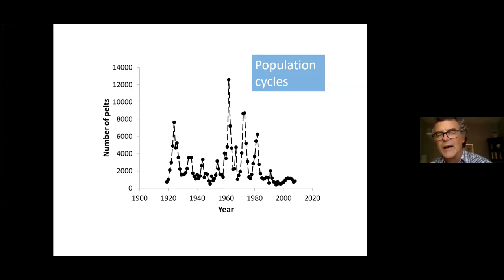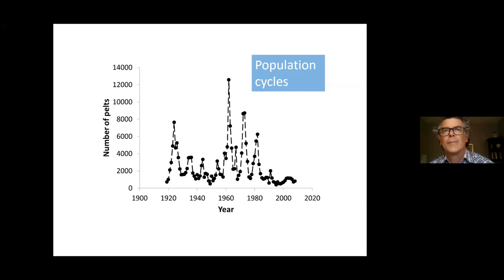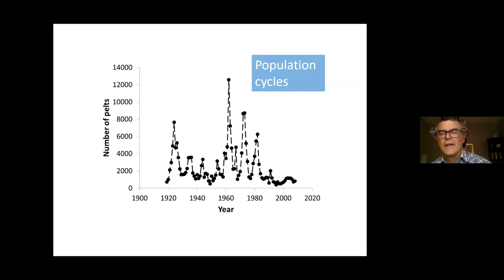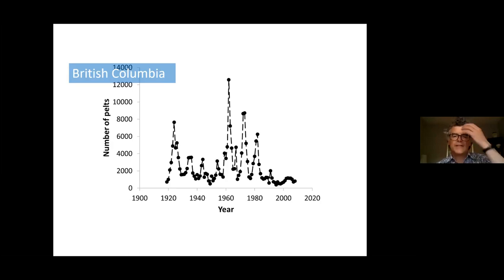Lynx lag behind the hare cycle by one to two years because of the time it takes to reproduce. The numerical increase in lynx is caused by increased reproduction: as hare populations go up, it takes time for lynx to respond reproductively, but they're pretty closely in phase across most of their range with cycling hares across Canada.